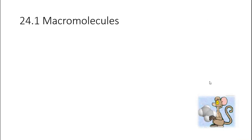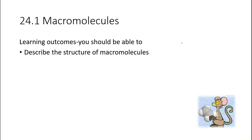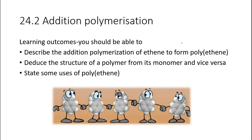For subtopic 24.1, Macromolecules, the learning outcome is: at the end of the lesson, you should be able to describe the structure of macromolecules. For subtopic 24.2, Addition Polymerization, you should be able to describe the addition polymerization of ethene to form polyethene, deduce the structure of a polymer from its monomer and vice versa, and state some uses of polyethene.